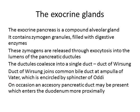The duct of Wirsung joins the common bile duct at the ampulla of Vater. The ampulla of Vater is encircled by the sphincter of Oddi, which controls whether it's open or not. On occasion, some individuals may have an accessory pancreatic duct which enters the duodenum more proximally.